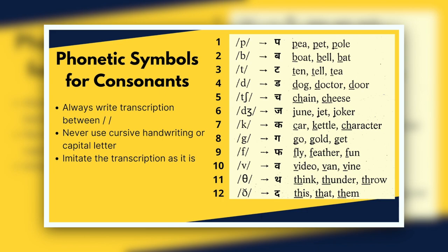The fifth one is CH, as in chain, cheese. The sixth one is J, as in June, joker, jet. The seventh one is K, as in car, kettle, character. Now it is a little bit confusing — when you read K-E-T-T-L-E (kettle) and C-A-R (car), it means that C and K both produce the sound of K. So you have to focus on the sound, not on the spelling. The eighth one is G, as in go, gold, get. The ninth one is F, as in fly, feather, fun.